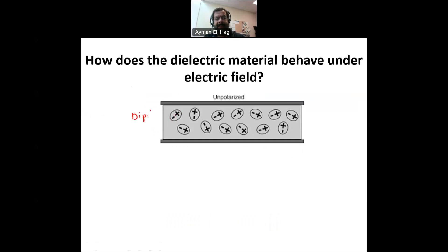These dipoles, basically, because these are the atoms inside the dielectric material, you have a negative and a positive charge, and they are neutral. Now, these dipoles are randomly oriented. So, the net electric field inside the material is equal to zero because they cancel each other.